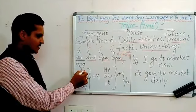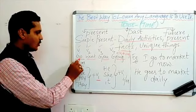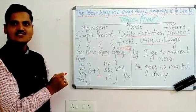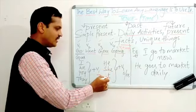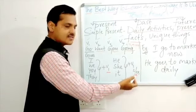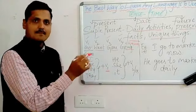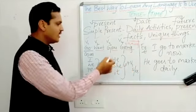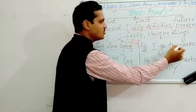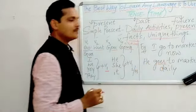For the subjects I, we, you, they — we use the V1 form, that is Verb 1 form — 'go', without s or es. But when the subject is he, she, or it, we take the verb in the first form itself but with s or es added. For example, if the word is 'go', we use 'goes'; if it is 'come', we use 'comes'. So he, she, it takes the s or es form of the verb. For example: 'I go to market now', but 'He goes to market daily'.